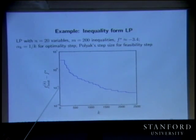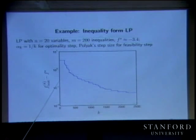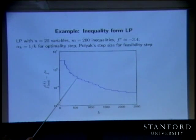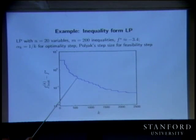Let's find out where 10 percent is — about 0.34 from f star. It took about 500 steps to get within 10 percent.